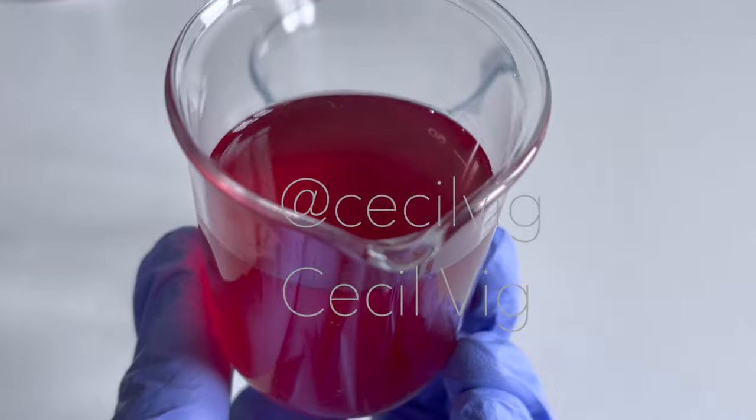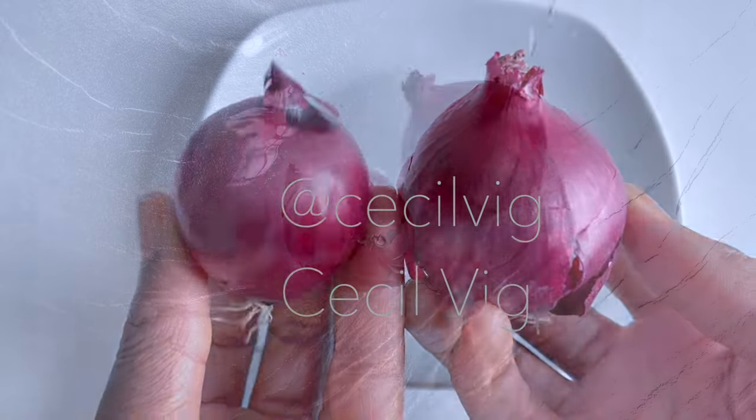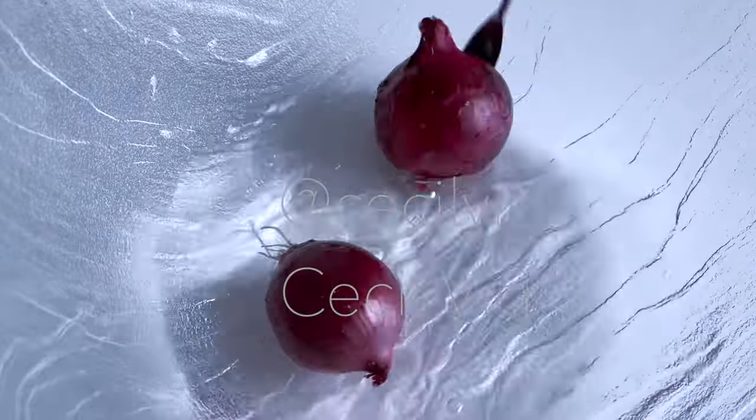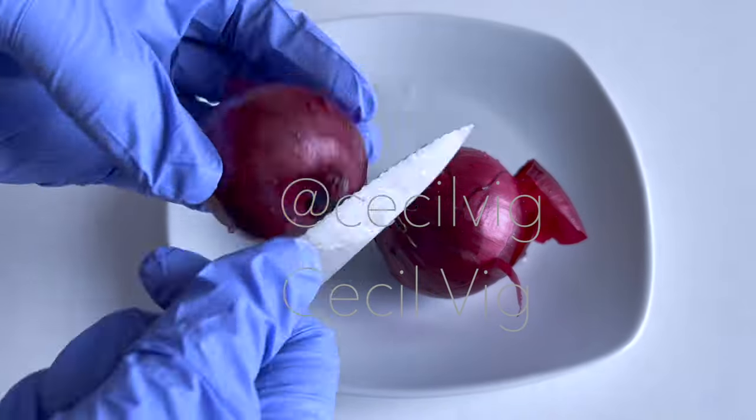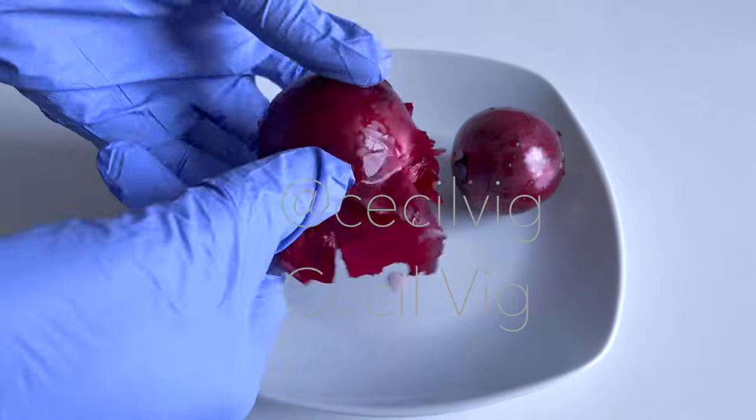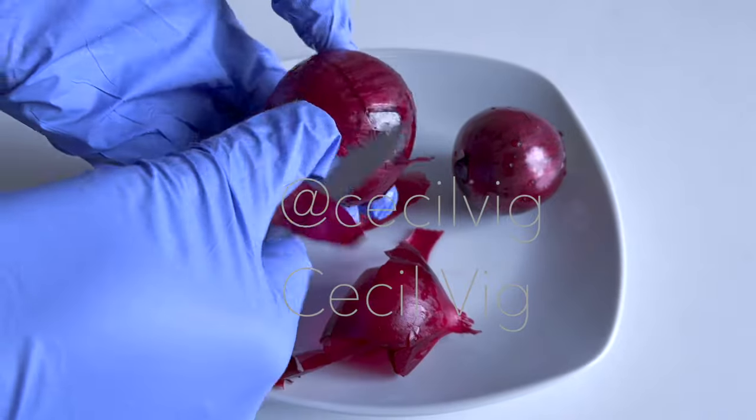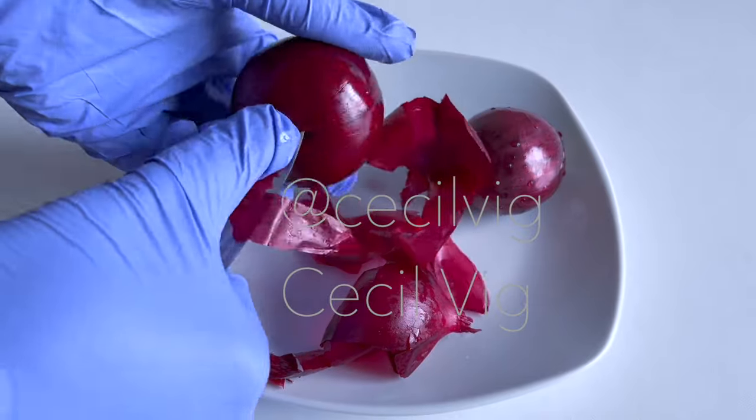To prepare this onion water, we need two medium-sized organic red onions. Make sure you wash them well. After washing the onions, cut off the edges then remove the thin outer skin.